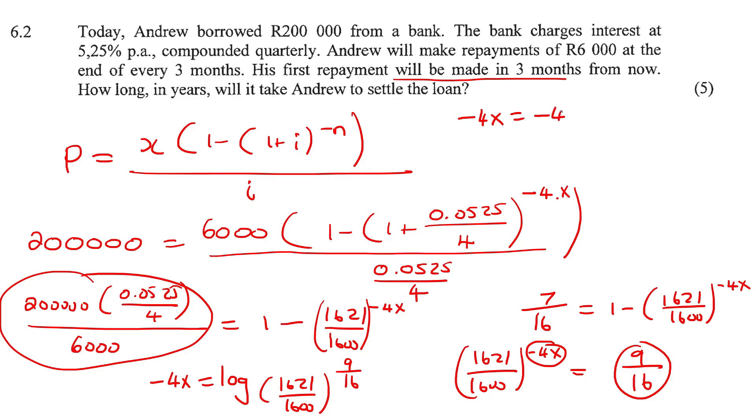And so you should end up with negative 44.1243. We can round off now because we finished with logs. Then to get X alone, you just divide everything by negative four. And that should give us 11.03 years.